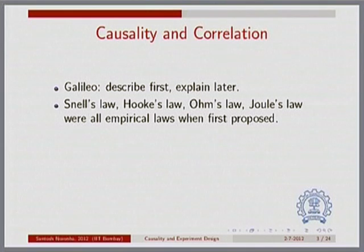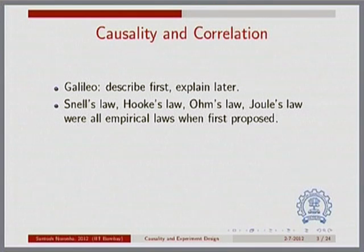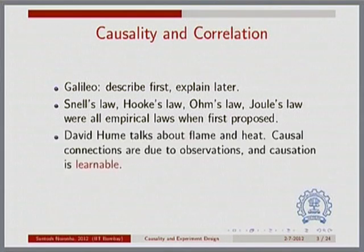Subsequently a whole bunch of scientists came up with all kinds of empirical laws — but these laws really had nothing to do with cause and effect. If you go back and look at these laws, they are equality statements. They say that some variable is related to some other variable; for example, Ohm's law says that the voltage drop is related to the current flowing through a resistor. But it is not clear what is causing what — they were all empirical laws obtained by observation when they were first proposed.